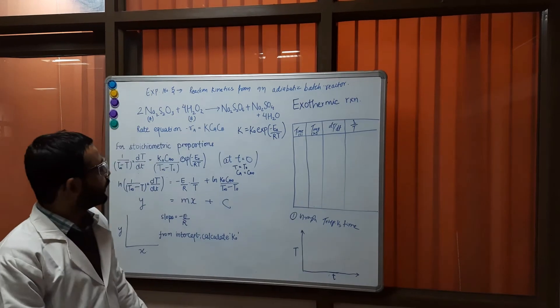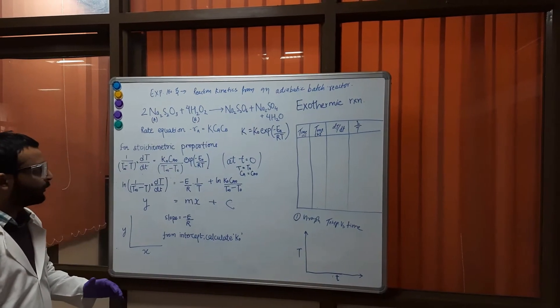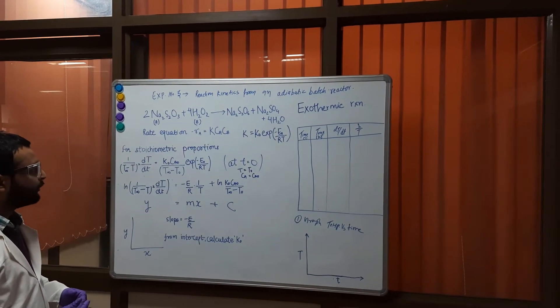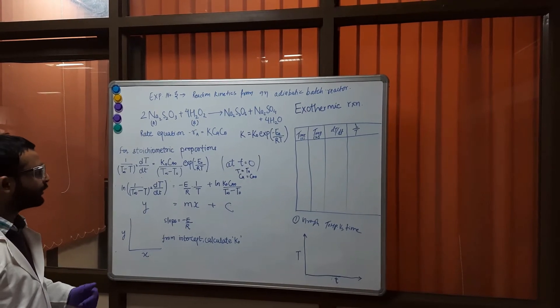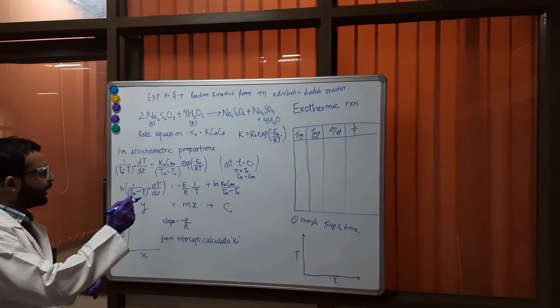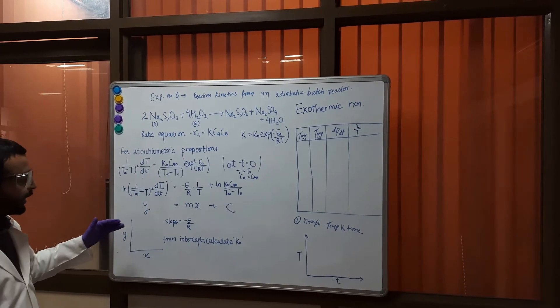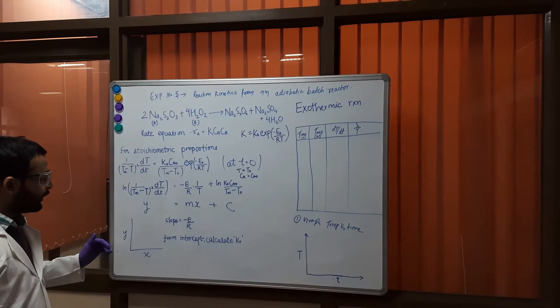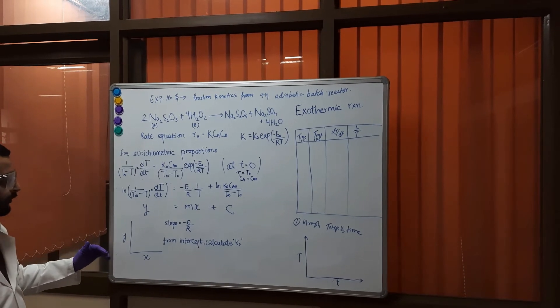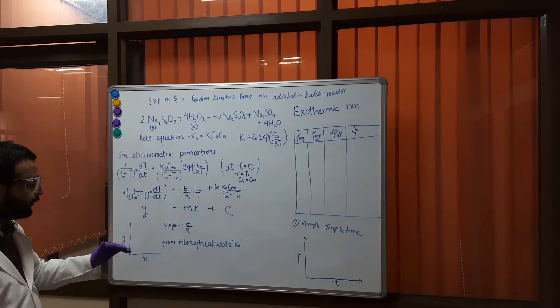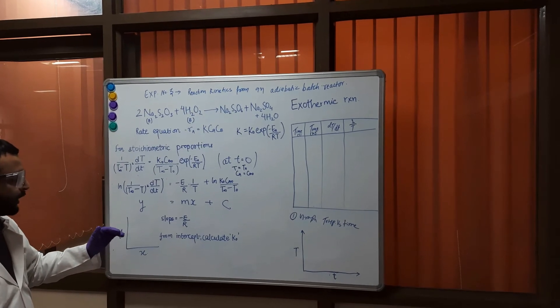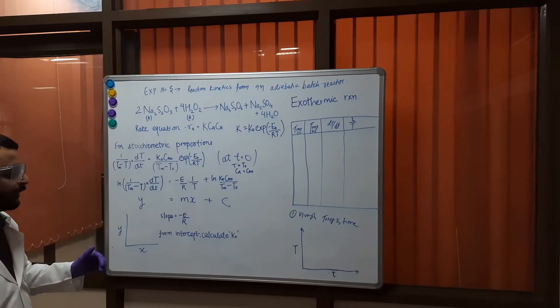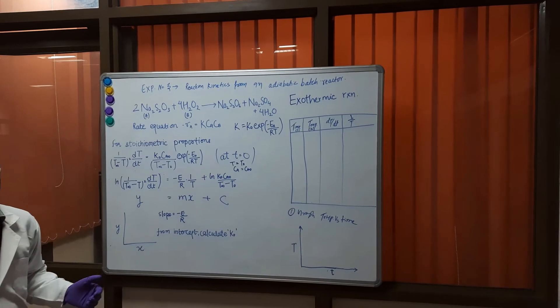For modifying the energy balance equation for stoichiometric proportion of an irreversible second order reaction we will get this equation and applying log we will get an equation of the type y equal to mx plus c and we will plot y with x. From the slope of the plot we can find the activation energy and from the intercept we can calculate the frequency factor.